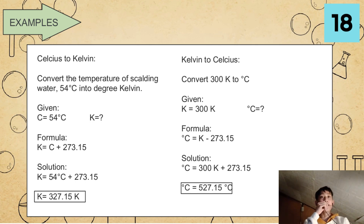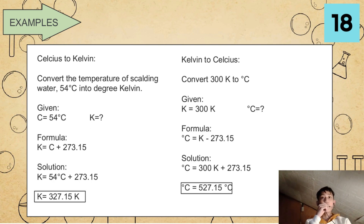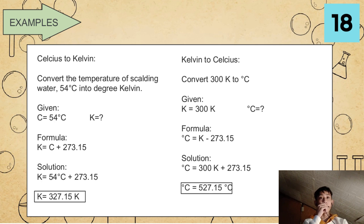We have an example in Celsius to Kelvin: convert the temperature of scalding water, 54 degrees Celsius, into Kelvin. Given: Celsius equals 54 degrees Celsius, and we are finding Kelvin. Our formula is K equals Celsius plus 273.15. Substituting: K equals 54 degrees Celsius plus 273.15. Once we solve that, Kelvin equals 327.15 Kelvin.